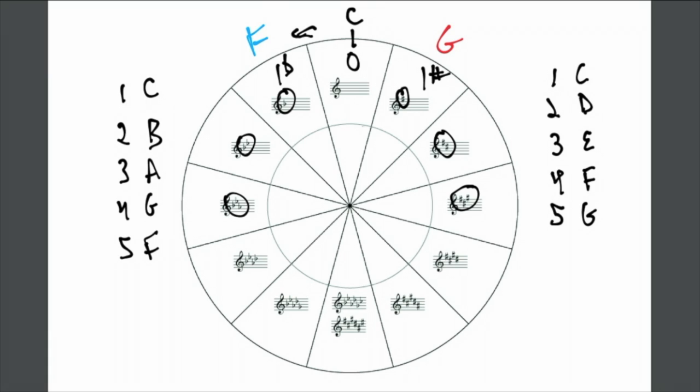For review, position one on the sharp side, one sharp is the G major scale. Position one on the flat side is the F major scale.